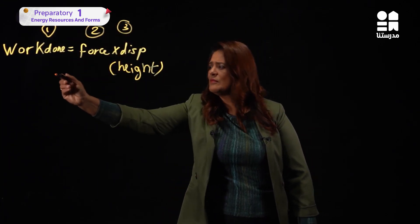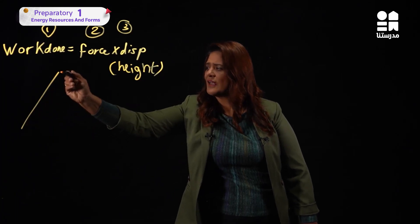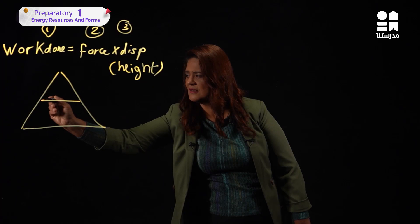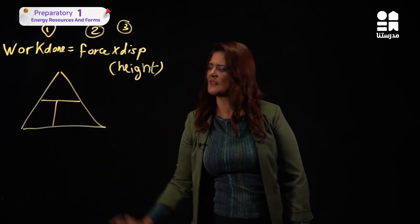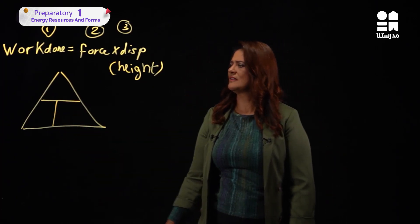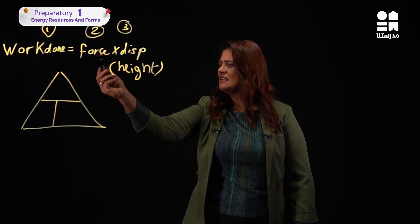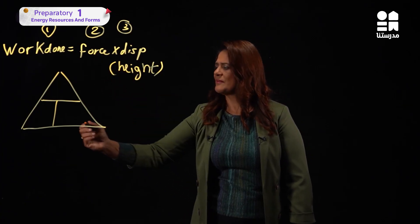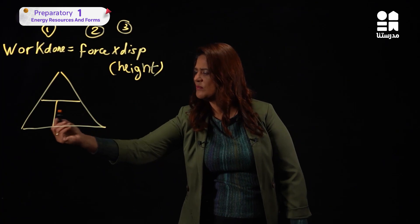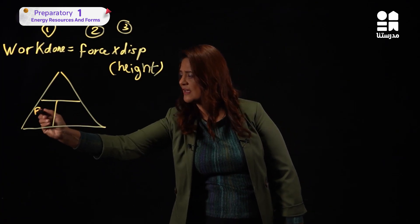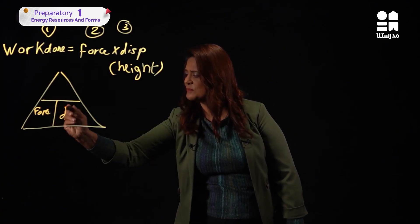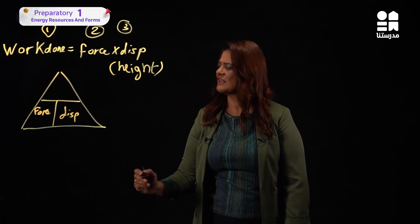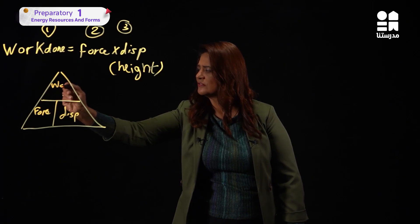Any rule that has three items — I have three items. I can make a triangle. This triangle idea is very important; we used it before. So I have force multiplied by displacement or height. I put them here together, both multiplied by each other.